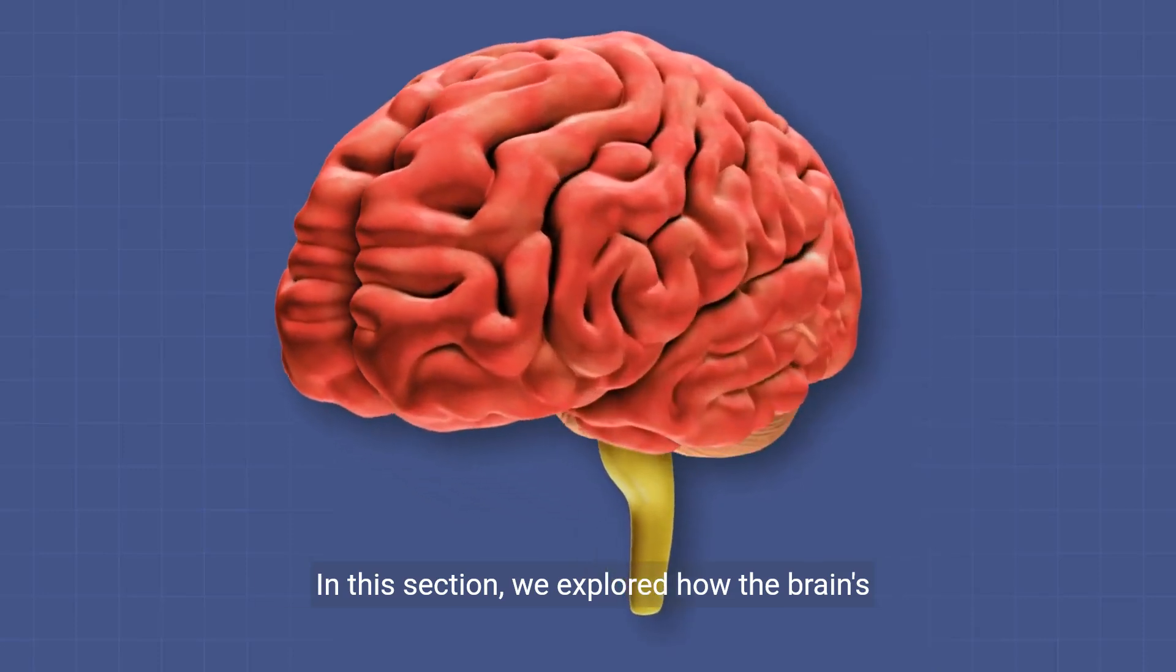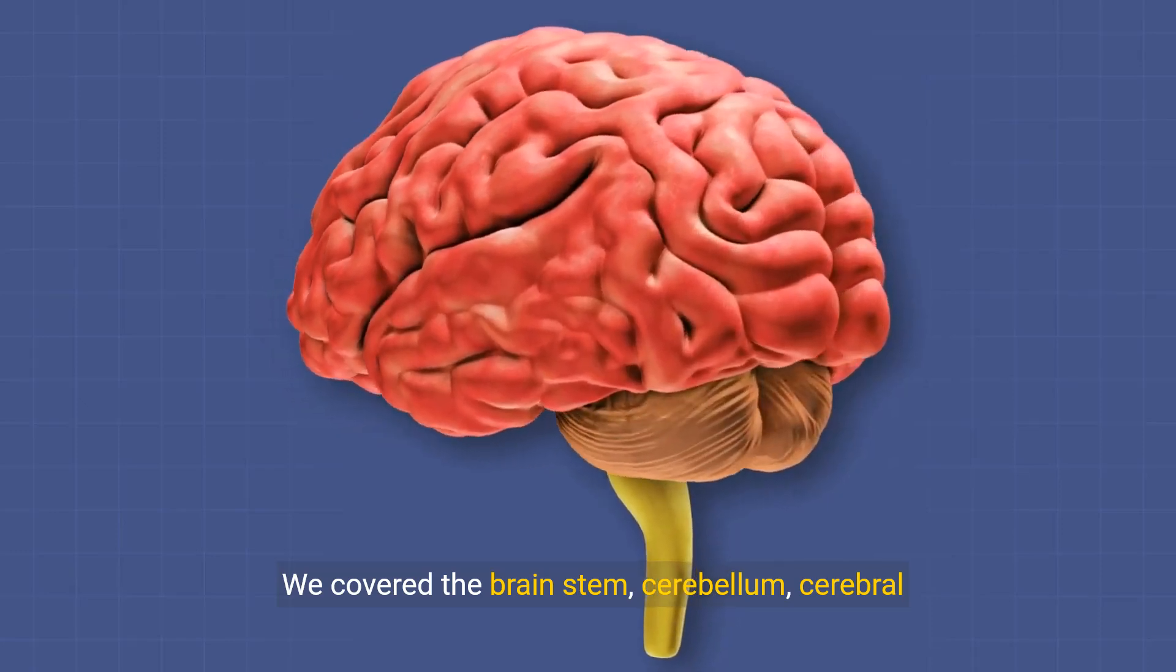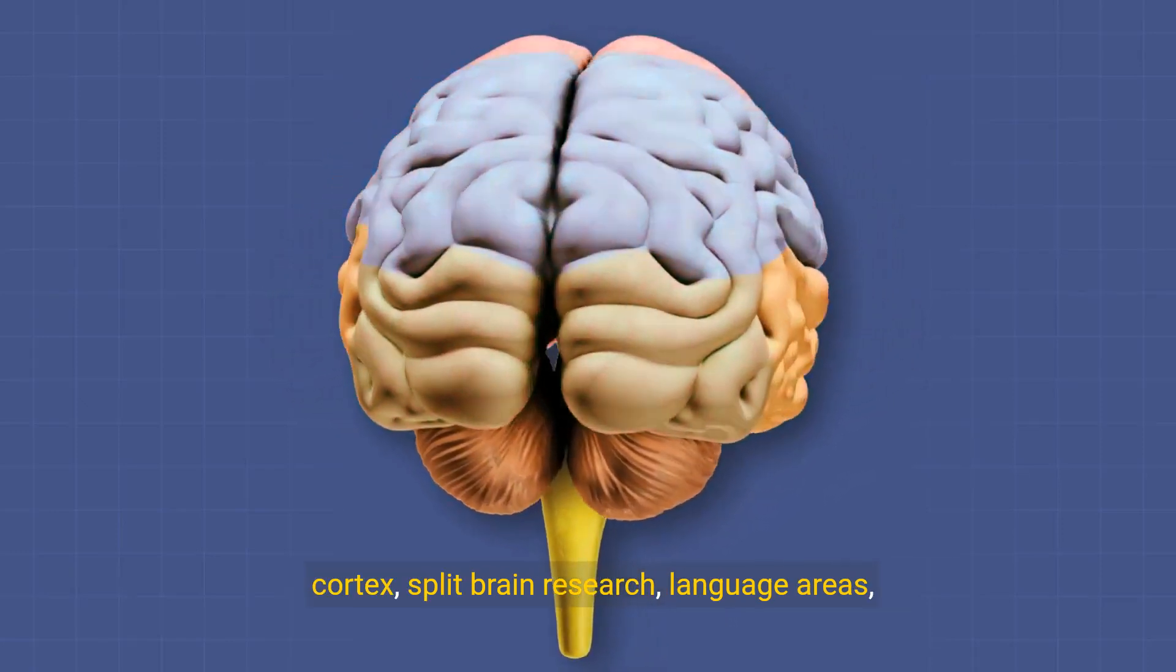In this section, we explored how brain structures apply to behavior and mental processes. We covered the brain stem, cerebellum, cerebral cortex, and split brain research.